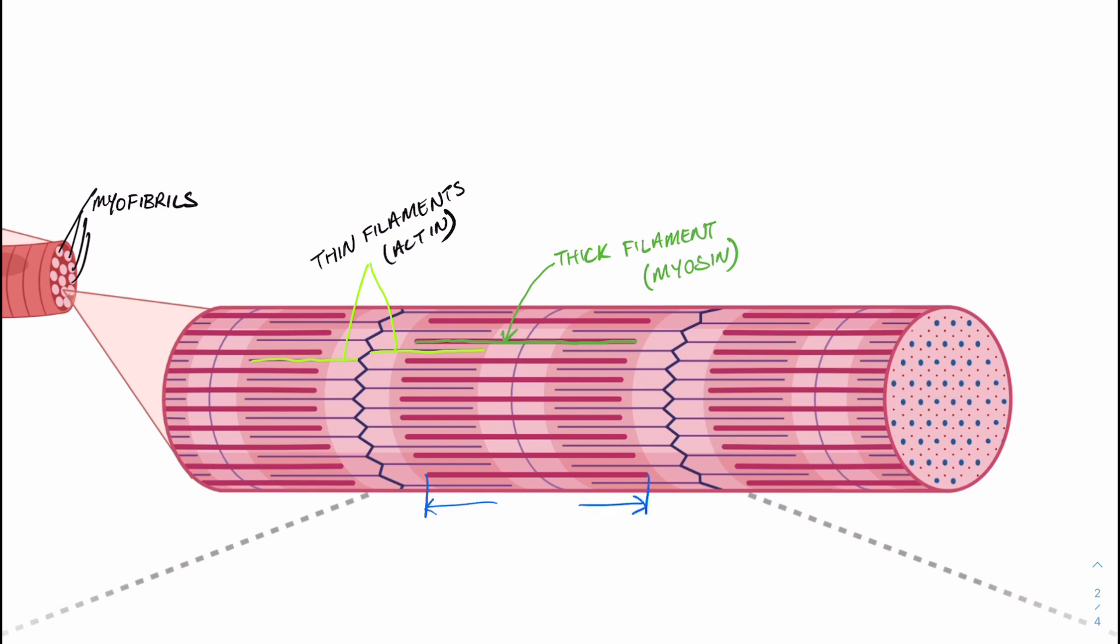Now looking down at the bottom of the myofibril, we have the ends of one thick filament and the region that forms is the A band. Then from the end of one thick filament to the end of a different thick filament, whereby that space does not contain any myosin, that'll be our light I band.